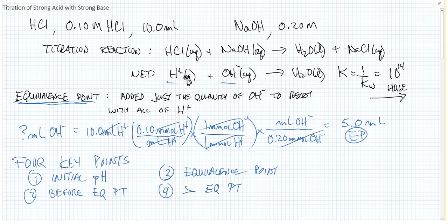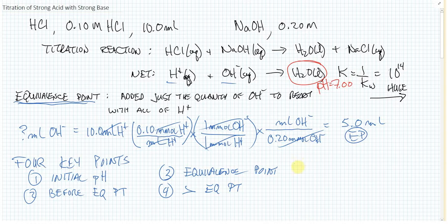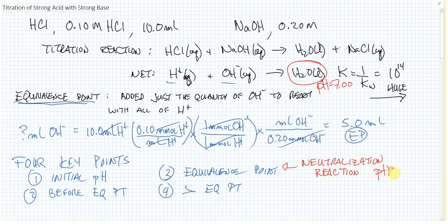Let's jump to the equivalence point. When we've reached it, the only thing produced is H₂O. Water is neutral, so this is a true neutralization reaction. The pH at the equivalence point is definitely equal to 7. Water produces equal quantities of H⁺ and OH⁻. We only have true neutralization when we react a strong acid and a strong base — pH at the equivalence point will be 7.